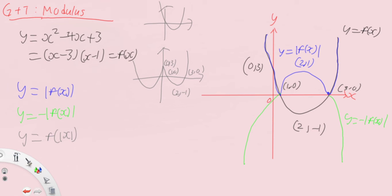Then on the left side you have (-1, 0). Remember, minus 1 is bigger than minus 3, so do beware of the ordering. Then (-3, 0), and down here (-2, -1), because mod of minus 2 gives you 2, and the corresponding y-value for x equals 2 is minus 1. This will be our graph of y equals f(mod x).